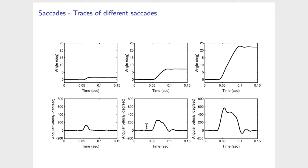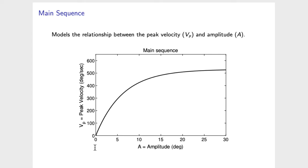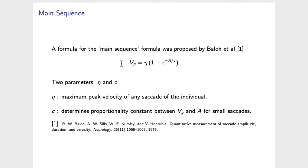So we see that for an individual, the bigger the saccade, the greater the peak velocity the saccade reaches. That can be depicted by a graph shown here, which models the relationship between the peak velocity of saccades and their amplitudes for a particular individual. Different individuals may have different curves. This kind of curve is often called a main sequence. The formula for this curve was proposed by Bahill and co-authors in 1975.